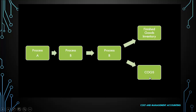So unlike job costing, the cost goes on accumulating all through these processes, and the final cost of goods will be visible at the end of process B.